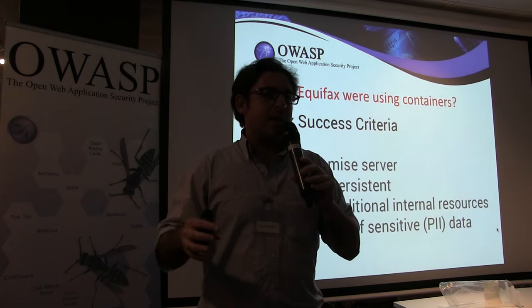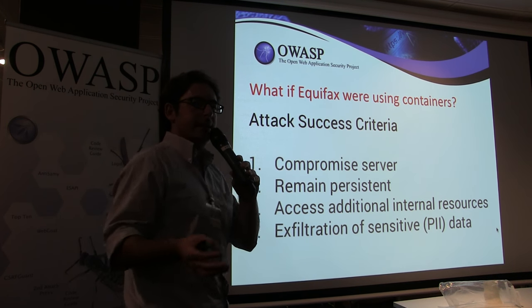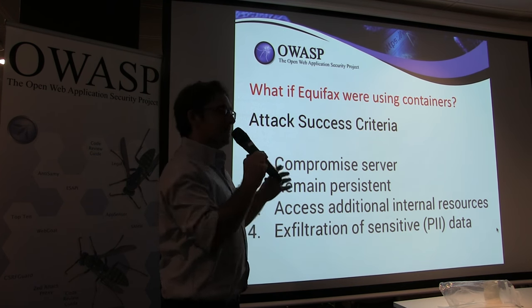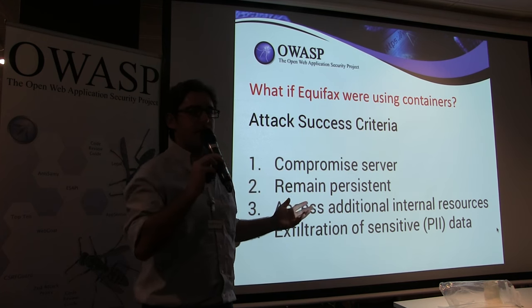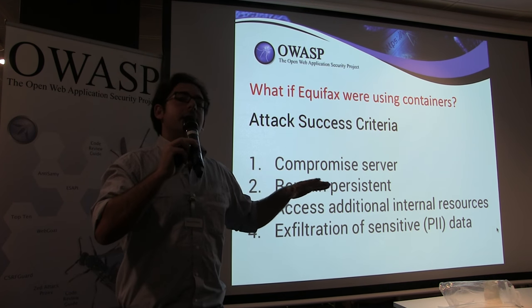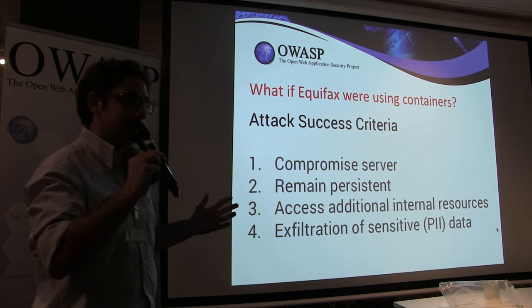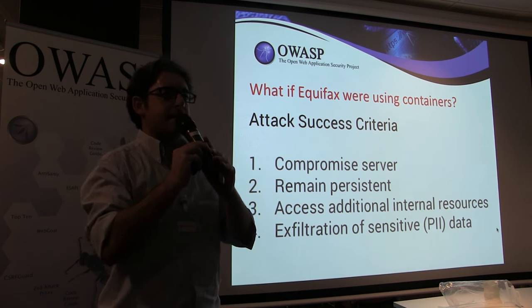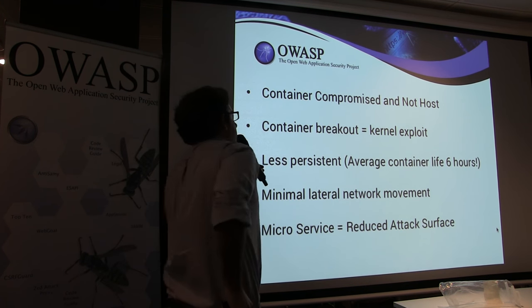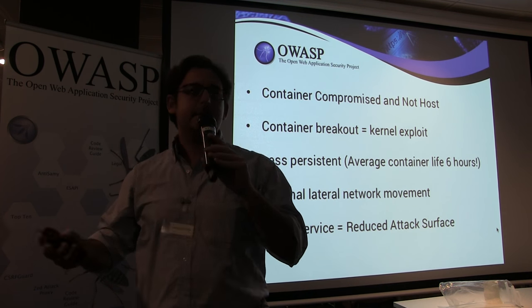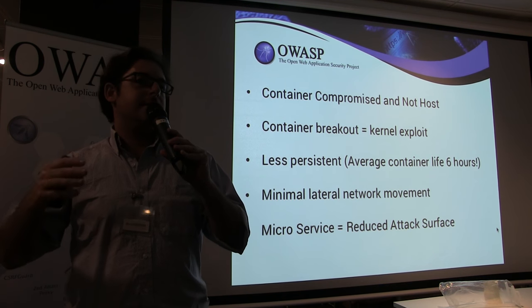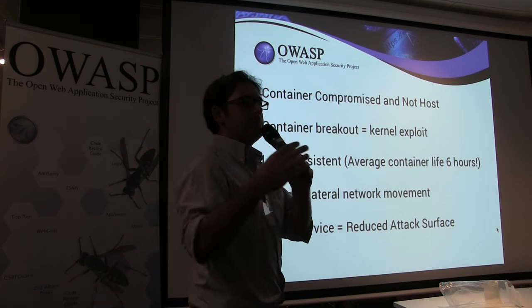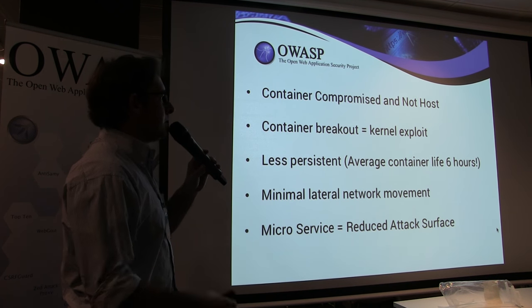If Equifax had used containers, would the impact have been mitigated? Looking at the core requirements of the attack: they had to compromise the Apache Struts server, they needed persistence, access to additional resources with lateral movement, and finally exfiltration of PII. If they were using a container, what would have been compromised? Not the host — the container. They would need a kernel-level exploit like Dirty Cow to break out of the container and get to the host, which would require significantly more resources.